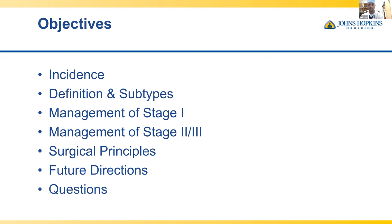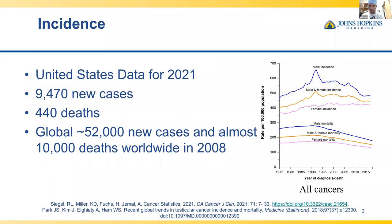This is the U.S. data and some global data for 2021 — roughly 9,470 cases with only 440 deaths, so not a big cause of mortality. The graph on the right shows the overall incidence of all cancers. You can see the incidence is roughly staying the same, but the mortality rates are decreasing, showing we're making progress.